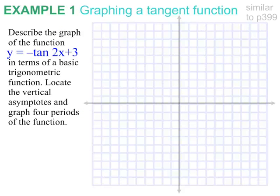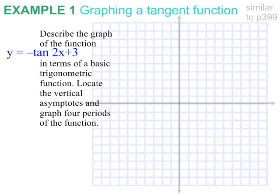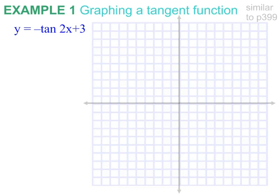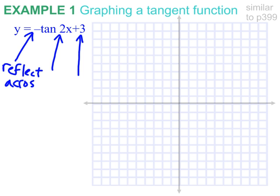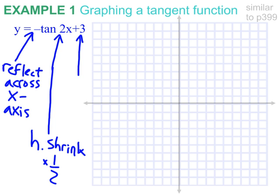So let's take that basic knowledge there and start jumping into this example, where we are asked to describe the graph of the function y equals negative tangent 2x plus 3 in terms of the basic trig function. We should be very comfortable with this by now. This is a reflection across the x-axis. The 2 there is a horizontal counterintuitively shrink by 1 half. And the plus 3 on the end is a translation up 3 units.